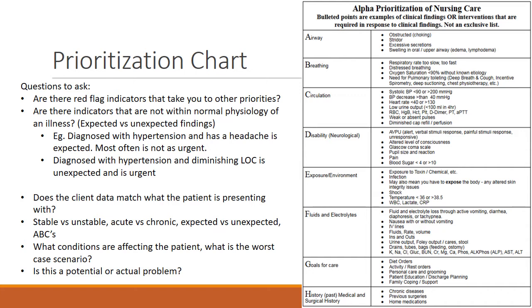We always prioritize the unstable patient over a stable patient, and always look at acute patients before chronic ones. Someone with acute 7/10 pain would be prioritized over someone with chronic 4/10 pain. Knowing the general pathophysiology of common illnesses is important to determine whether results are normal. Also ask: is this a potential problem or an actual problem? We always look at actual problems first because they present with relevant data.